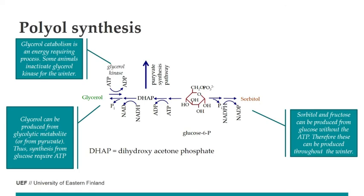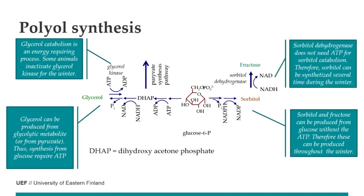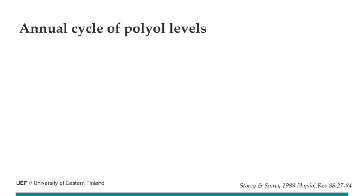Animals produce glycerol early in fall and remove it late in spring. For sorbitol catabolism, NADH is used to form fructose, which can convert to other sugars without requiring ATP — so sorbitol and fructose concentrations can vary even mid-winter. A typical pattern is high glycerol throughout winter, with sorbitol or fructose added during the very coldest periods.